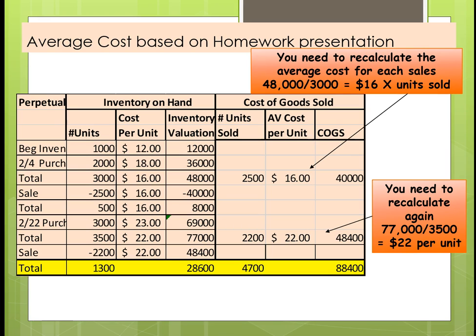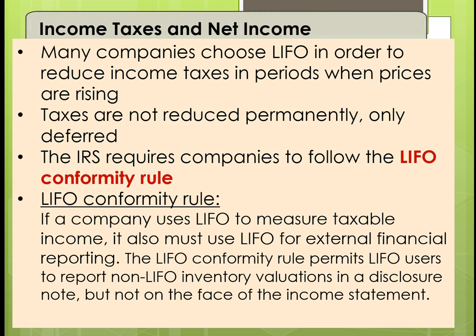The last thing is income taxes. Taxes are not reduced permanently, but in some cases they are. The IRS requires companies to follow the LIFO conformity rule: if a company uses LIFO to measure taxable income, it must also use LIFO for external financial reporting. The LIFO conformity rule permits LIFO users to report non-LIFO inventory valuation in a disclosure note, but not on the face of the income statement. In real life, a lot of companies do LIFO for tax and FIFO for financial reporting. Remember, LIFO is not accepted under the international standard.